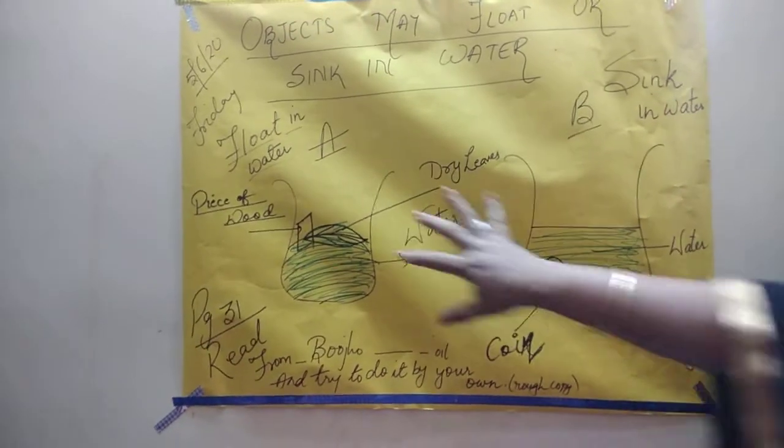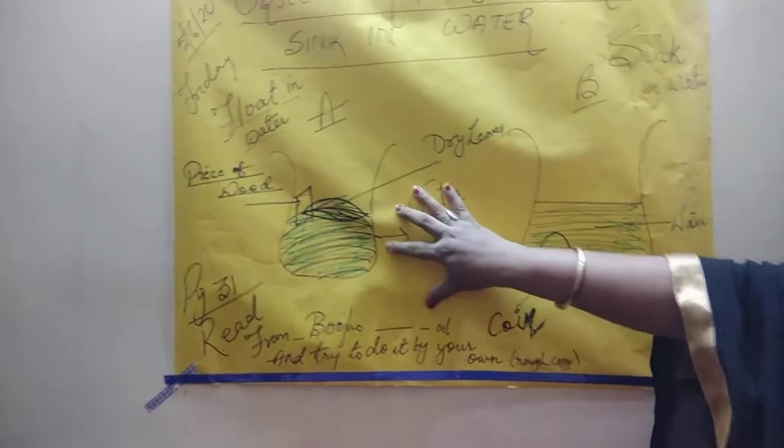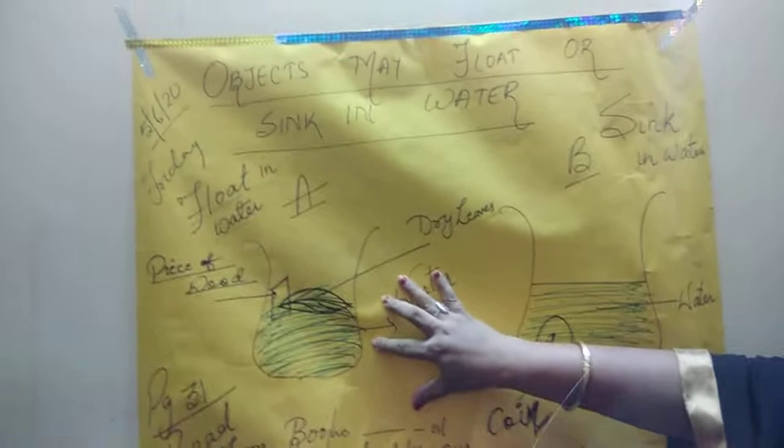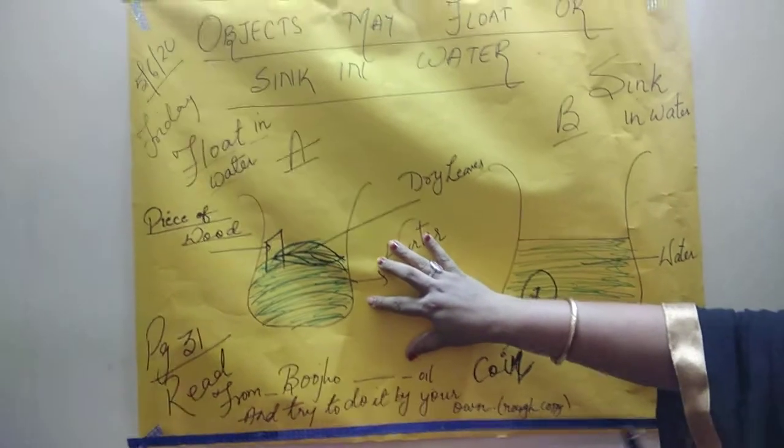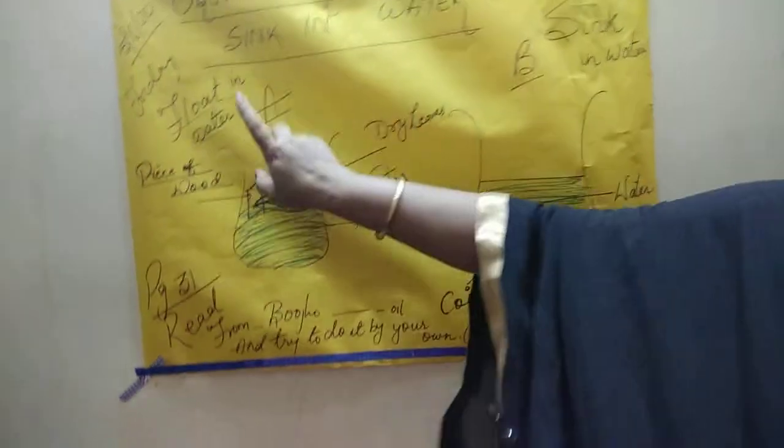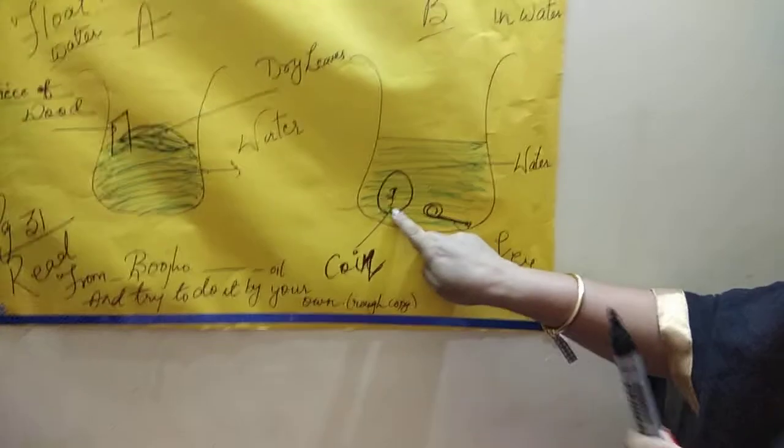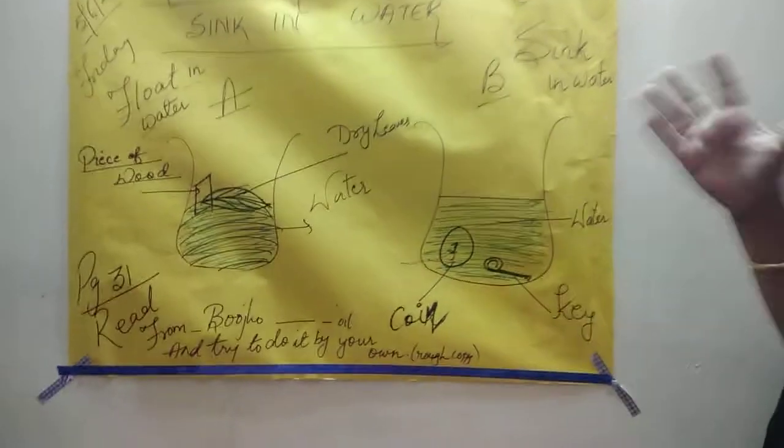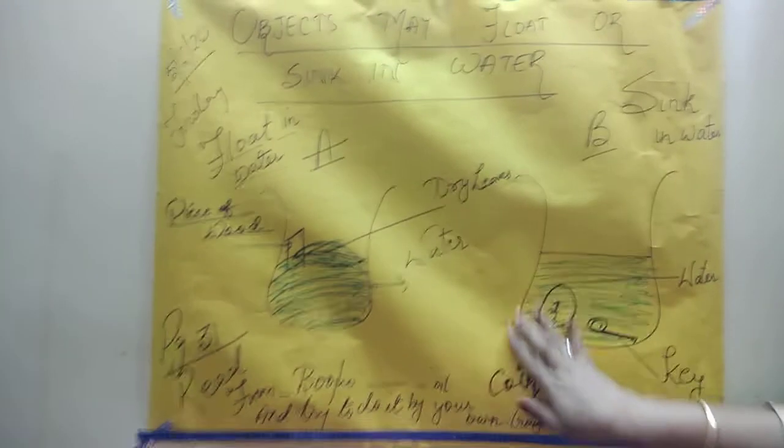Now this is the meaning of floating. That is the things whose mass, jiska weight water se kam hota hai. Objects whose mass is less than water they always float. And objects whose mass is heavier than water, jinka weight paani se zyada hota hai, they will always sink.